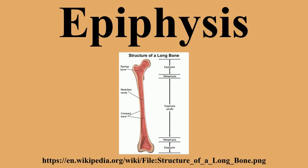The epiphysis is the rounded end of a long bone at its joint with adjacent bone. Between the epiphysis and diaphysis lies the metaphysis, including the epiphyseal plate. At the joint, the epiphysis is covered with articular cartilage. Below that covering is its own layer similar to the epiphyseal plate, known as subchondral bone.